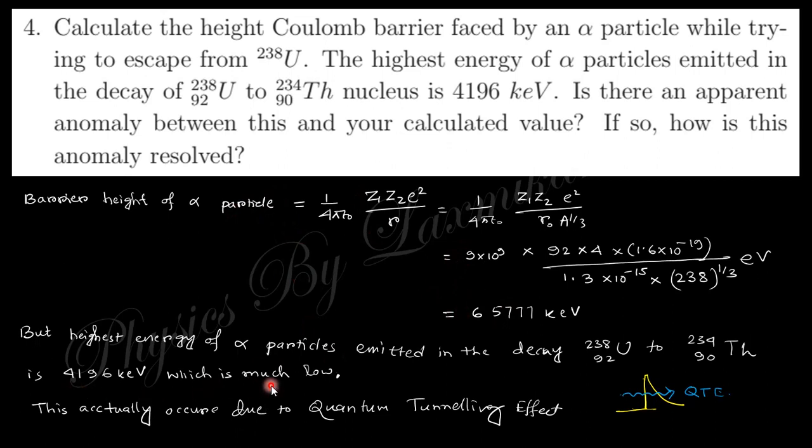But the transition gives the alpha energy is like that. So you can see the barrier height is higher than the energy of alpha particle. So how is the alpha particle ejected from the nucleus?